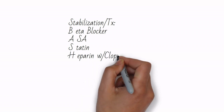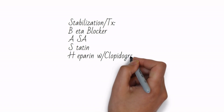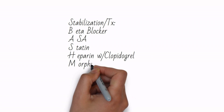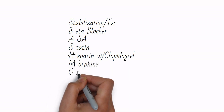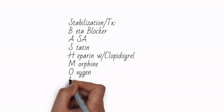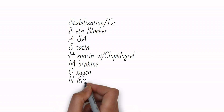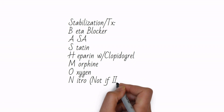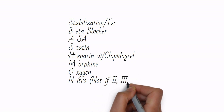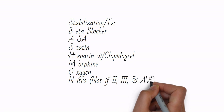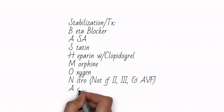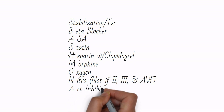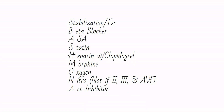Stabilizing measures in the ED include the BASH-MONA interventions. BASH-MONA puts the most important letter first: beta blocker, aspirin, statin, heparin with clopidogrel, morphine, oxygen, nitroglycerin, and ACE inhibitor. Remember to avoid nitro in patients with ST elevations in leads 2, 3, and AVF, because an inferior or right-sided MI will be worsened. This is because nitro is a venodilator which decreases preload. Preload is all that is forcing blood into the right heart in a right-sided MI. Also do not give nitro if the patient does not have enough blood pressure.